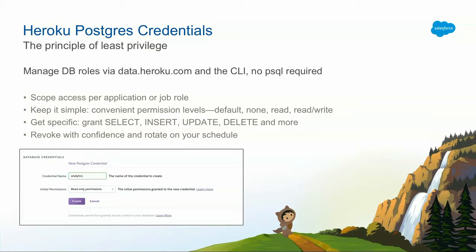Along similar lines, we have some access control features with Heroku Postgres that are really handy. You don't have to connect to the database directly and issue a lot of PSQL statements to create roles and give them certain levels of access. We have a nice wrapper around that in both data.heroku.com and through our command line tool — for example, to give a read-only role. Say you have another application that you want to connect to your main app's data, but it's only an analytics function. It really doesn't need to write back to that data store. You can create a read-only credential and attach it to the database. If that gets exposed, you can quickly remove it or rotate it, and it will seamlessly update the other app without impacting the primary use of that database.